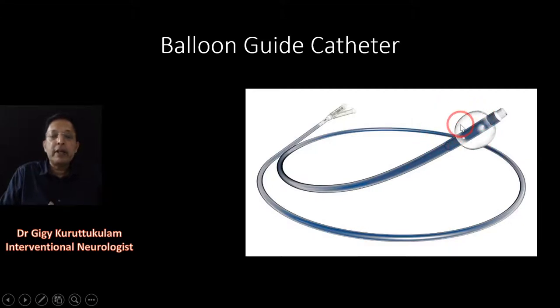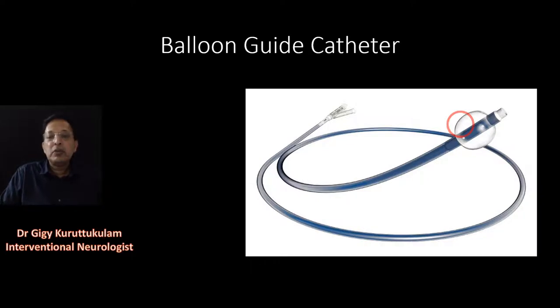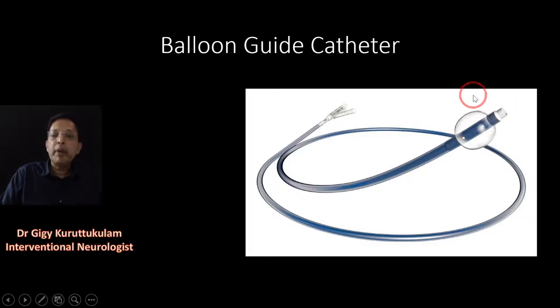For mechanical thrombectomy, one of the preferred catheters is what is called a BGC. Interventionists use the term BGC frequently, so neurologists should know about it — BGC stands for Balloon Guide Catheter. This is nothing but a guiding catheter which has a balloon at its tip.